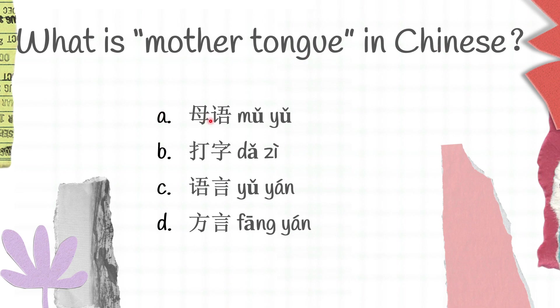We have: A 母语 (mou yu), B 答字 (da zi), C 语言 (yu yan), D 方言 (fang yan). Is it A, B, C, or D? 母语 is mother tongue, 答字 is type, 语言 is language, 方言 is dialect. And mother tongue in Chinese is A — 母语.